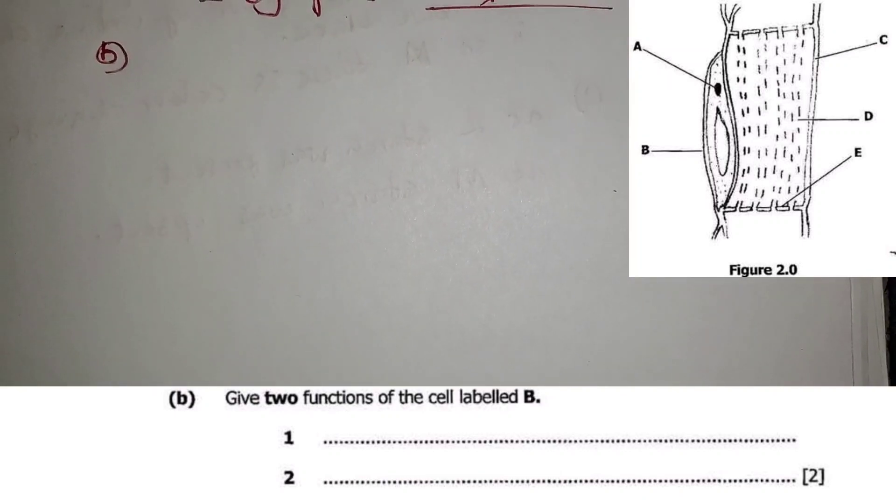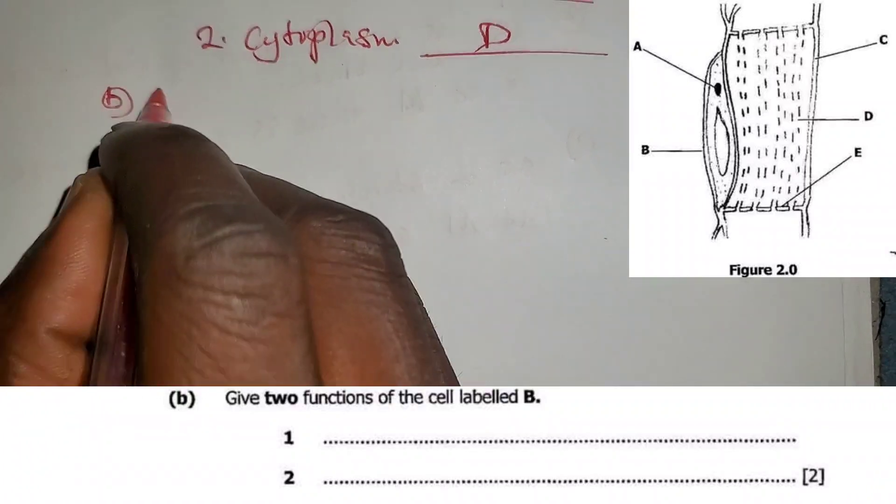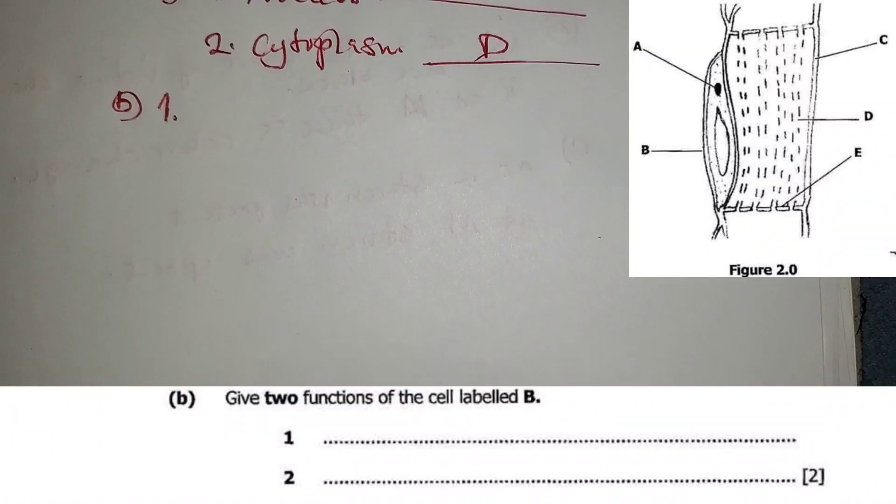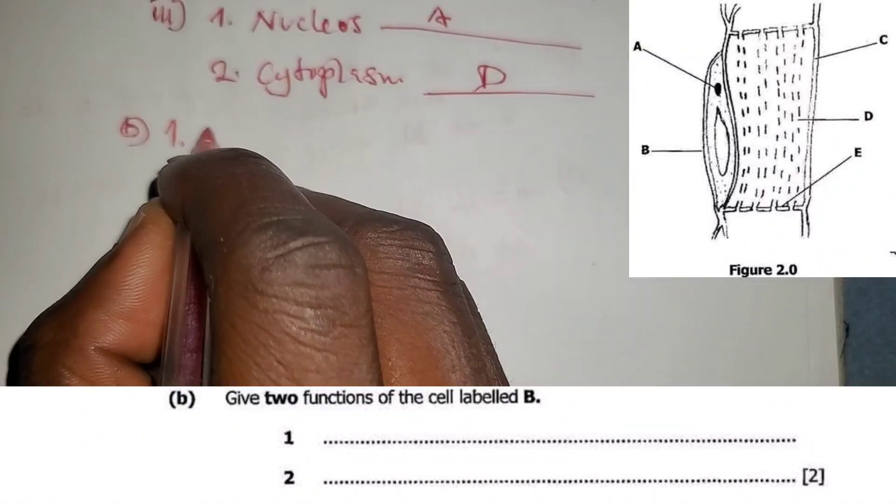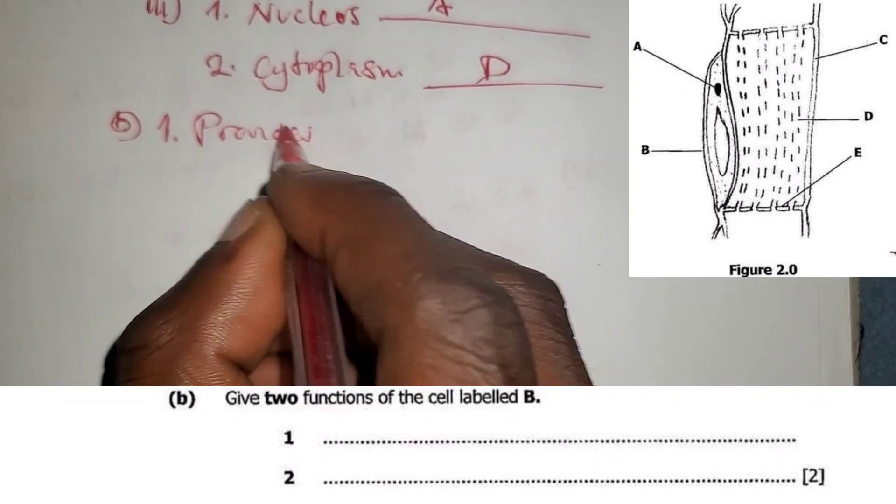Question B: Give two functions of the cell labeled B. The cell labeled B is the companion cell. Number one: a companion cell provides energy to the cell.